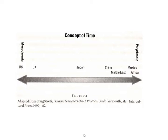Here you can see a picture showing some countries towards monochronic and others towards the polychronic concept of time. US, UK, and Japan are somewhere in the middle. Japan is a very interesting case — it's a high context country, but when it comes to the concept of time, it's monochronic. They value time and are very particular about it. That's the interesting bit: despite being a high context culture, the concept of time in Japan is monochronic.